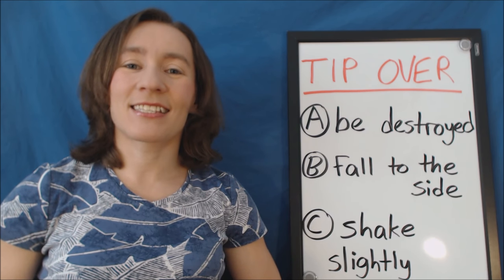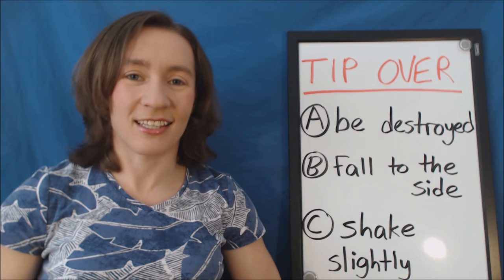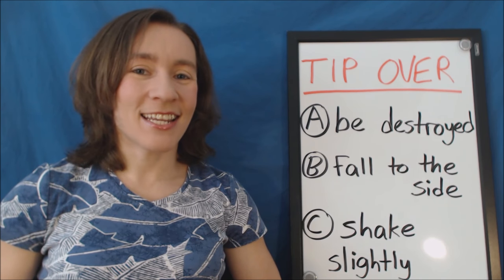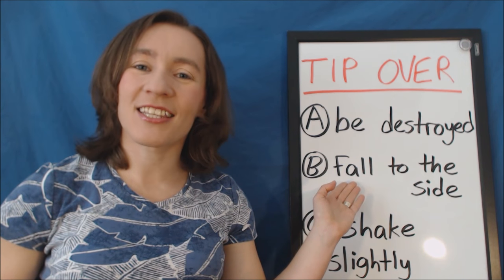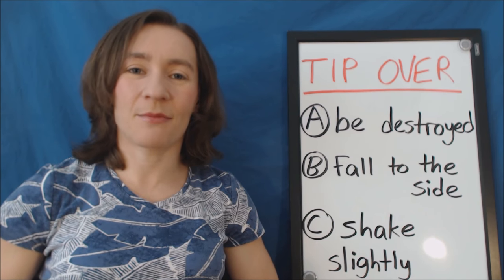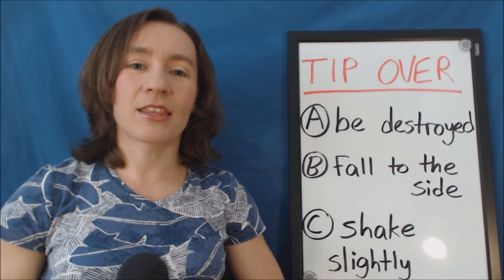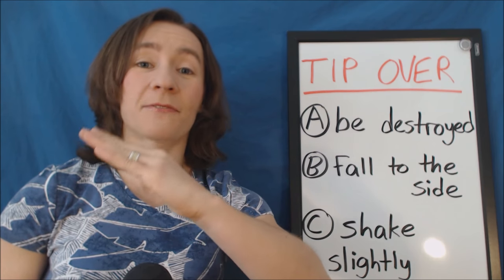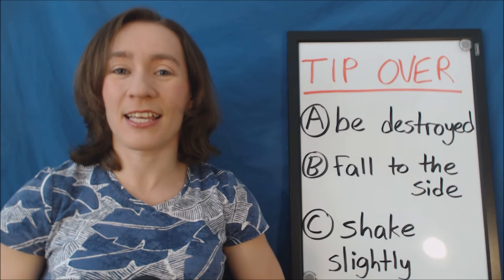Based on this example, what does it mean to tip over — A, B, or C? Tip over means B, fall to the side. So in this situation, I bumped into a table — that means my body collided with, hit a table — and then the lamp that was standing on the table started to tip over, started to fall to the side, and luckily my husband caught it before it broke.